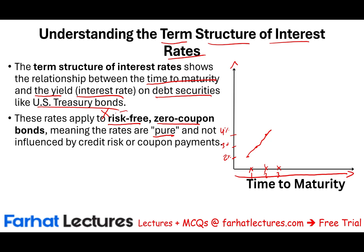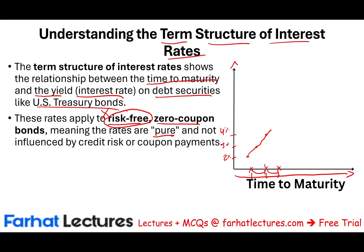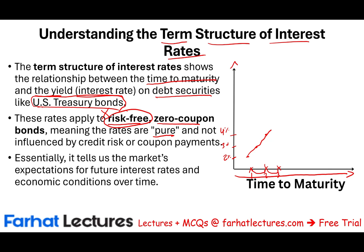Why are we doing this? We want to see what's happening to expected inflation. If this is a risk-free investment, there's no default. So what makes the difference between year one and year two is time, and since there's no risk, it must be inflation. This term structure tells us the market expectation for future interest rates and economic conditions over time.